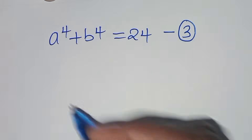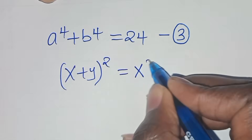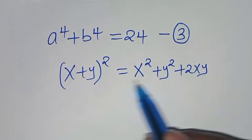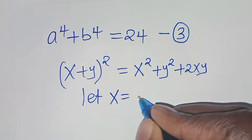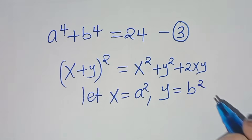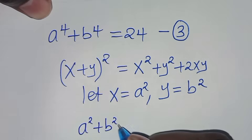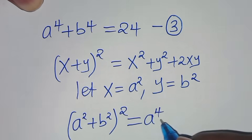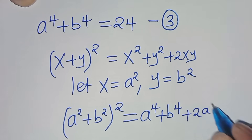In the next step, we use the algebraic identity: (x plus y) raised to the power of 2 equals x squared plus y squared plus 2xy. Applying this identity, we let x equal a squared and y equal b squared. So (a squared plus b squared) raised to the power of 2 equals a to the power of 4 plus b to the power of 4, plus 2 times a squared times b squared.